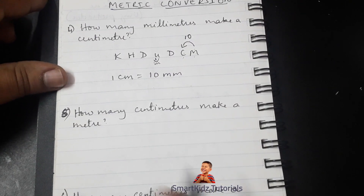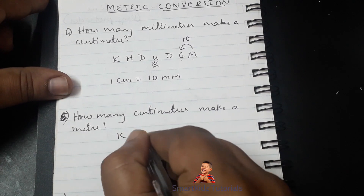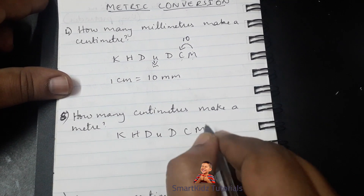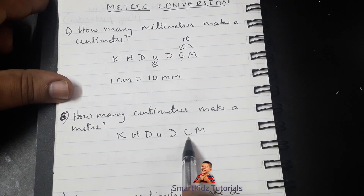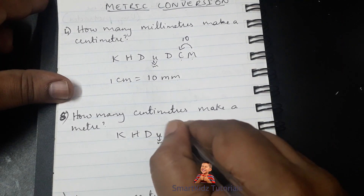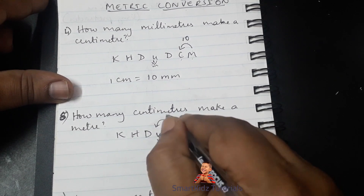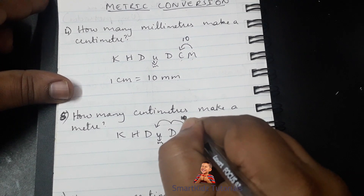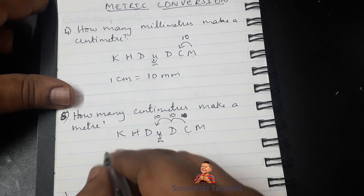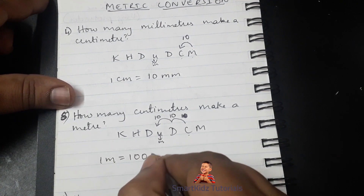The fifth question: how many centimeters make a meter? King Henry Died Unexpectedly Drinking Chocolate Milk. Centimeters is here and meter is here — our unit — so that's one place, two places towards the left, which means we multiply: 10 and 10. 10 × 10 gives us 100, which means 1 meter equals 100 centimeters.